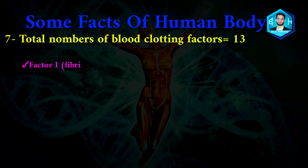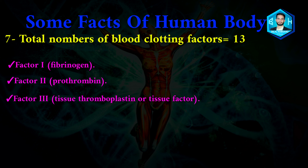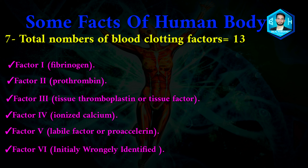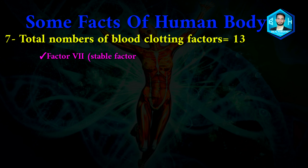The blood clotting factors are: factor one — fibrinogen; factor two — prothrombin; factor three — tissue thromboplastin or tissue factor; factor four — ionized calcium; factor five — labile factor or proaccelerin; factor six — which is still unknown.